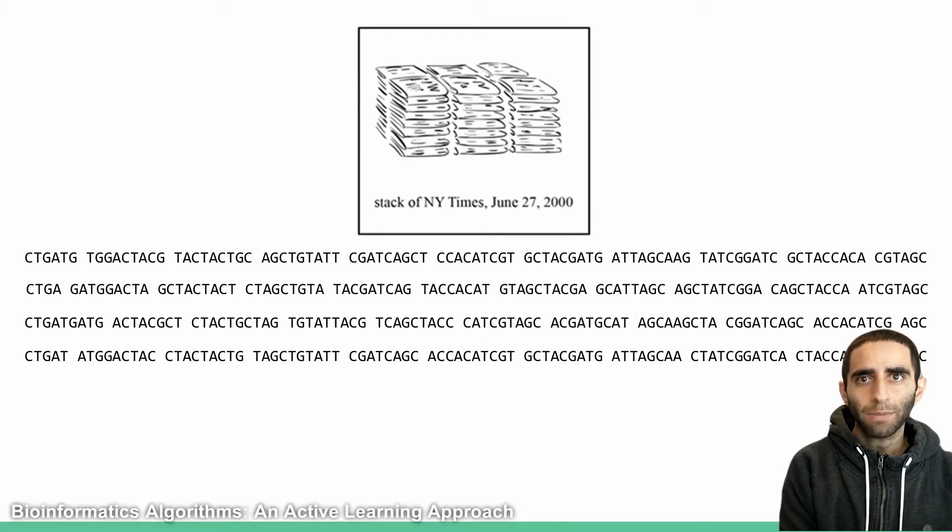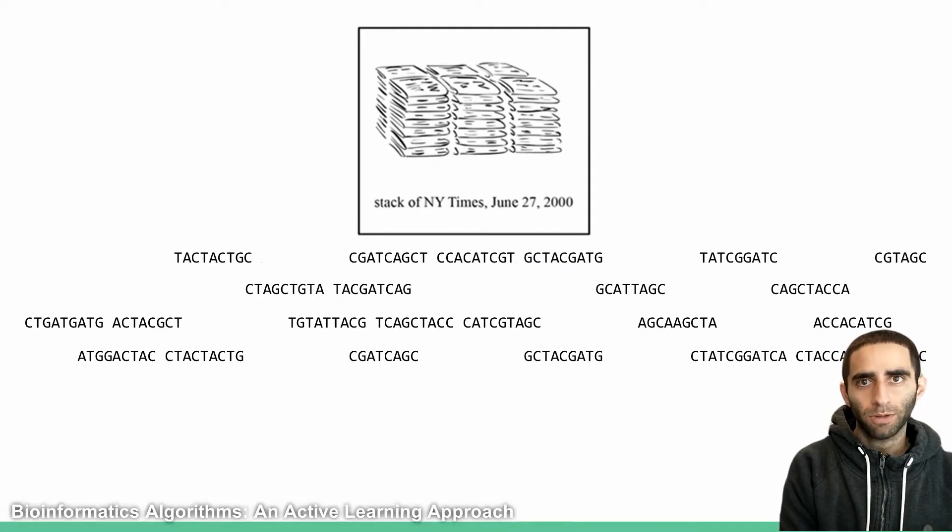A DNA sequencer is able to read these small fragments, or reads, as we call them. Much like the newspaper problem, in which a lot of the small fragments fizzled away in the explosion, we don't actually get to observe every single possible small fragment. We don't get to see every single read.